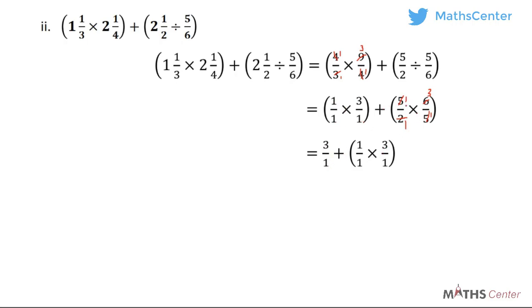So we're going to have 3 over 1 here, plus 1 times 3 gives 3 and 1 times 1 gives 1. We've simplified both brackets. Now 3 divided by 1 is 3, and 3 divided by 1 is 3. So we're going to have 3 plus 3, and 3 plus 3 gives us 6. Thank you for watching this video. See you in the next video where we will take more questions on expressions that involve more than one operation.